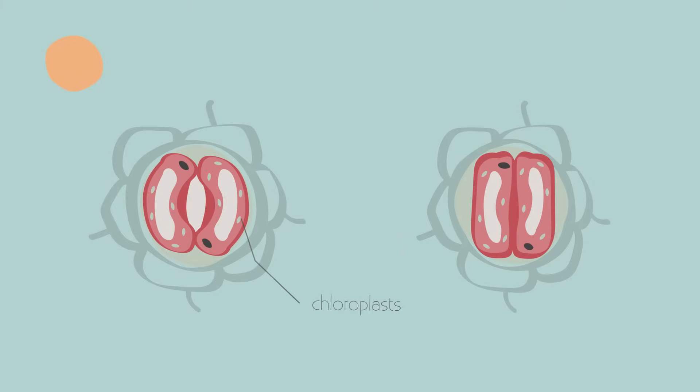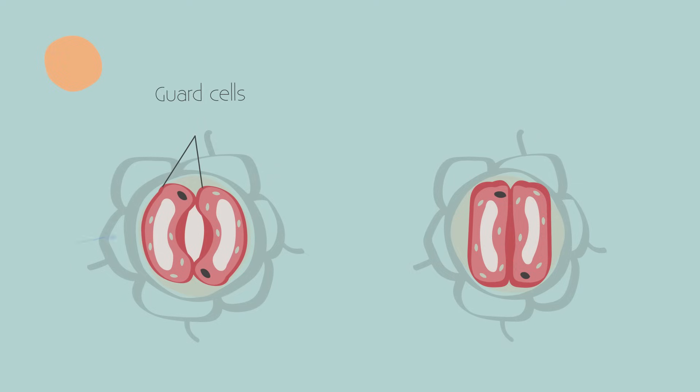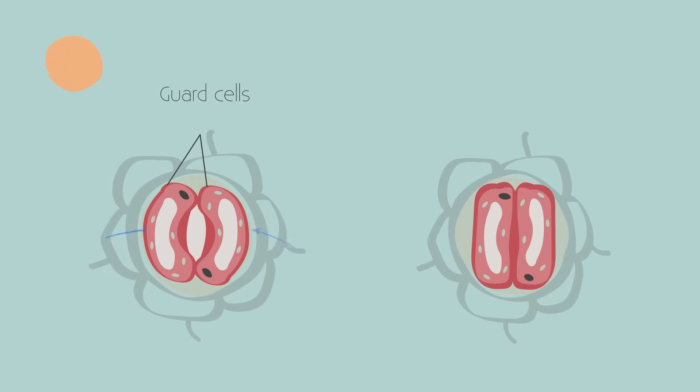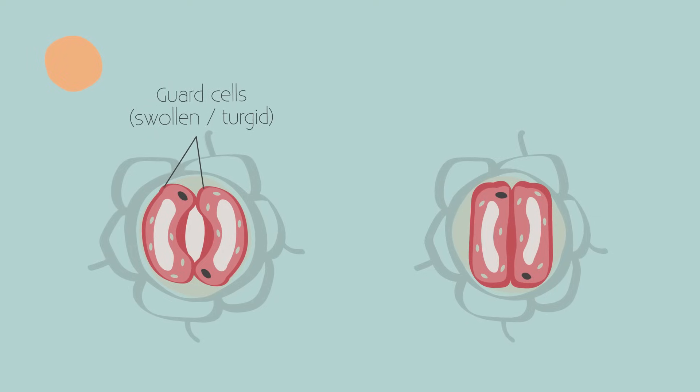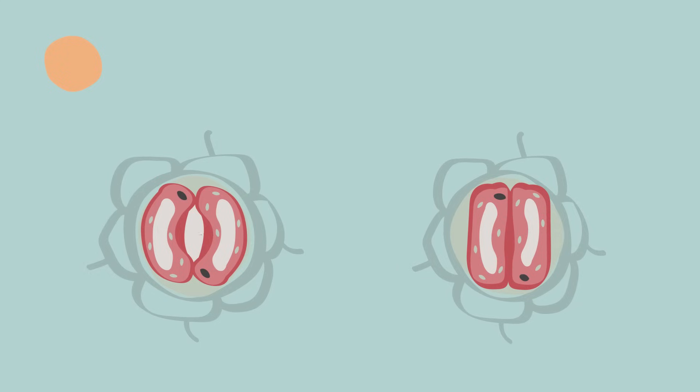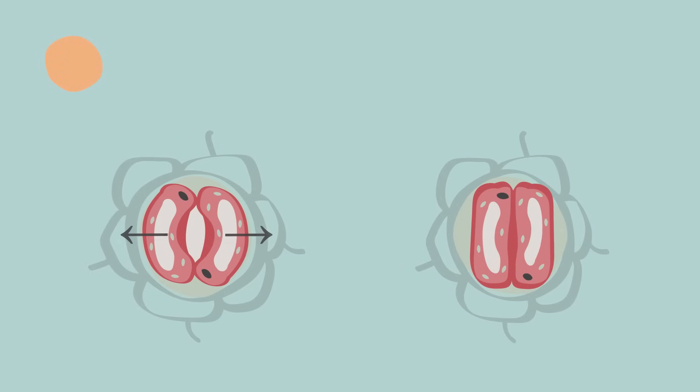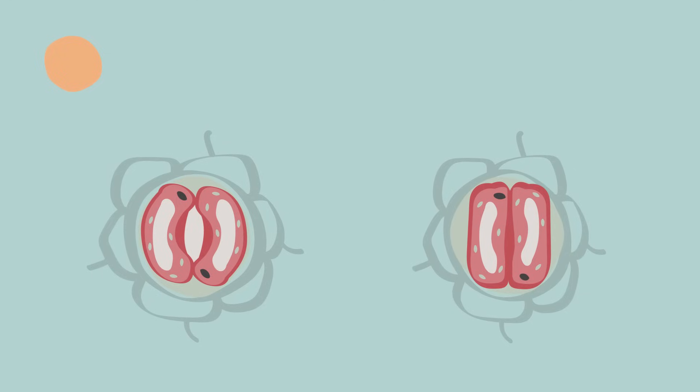During daylight hours, chloroplasts produce sugar. This lowers the water potential of the guard cells, and they take in water by osmosis. This makes the guard cells turgid. Because the guard cells have a different cell wall thickness, when turgid, they bend more on the outside into sausage shapes. This opens the stomata or the pore. Water can then be lost.